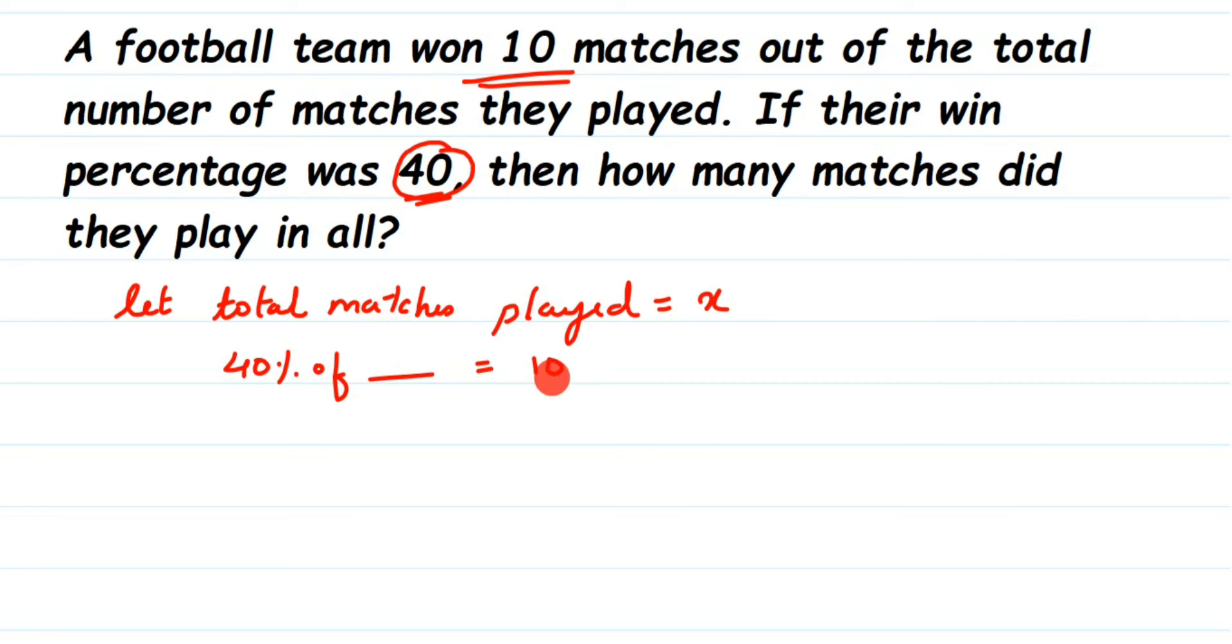This will become X here because we have assumed total matches to be X. So 40 percentage of X is equal to 10. Now we are going to expand this and get the value of X. If you are able to frame this, you can find out the answer easily. This will be equal to 40 divided by 100—percentage means divide by 100 and remove the percentage sign. Of means multiplication, so we have 40/100 × X is equal to 10.